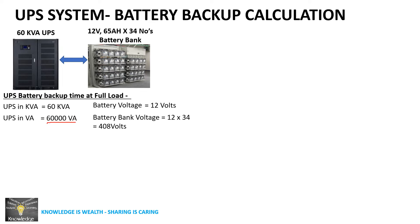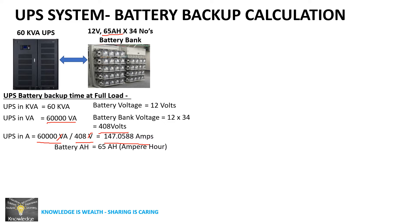Now we have the UPS capacity in volt-ampere and the battery bank voltage. To calculate the amperes: 60,000 volt-ampere divided by 408 volts — the volt units cancel — giving 147 amperes. The battery backup calculation is ampere-hours divided by amperes, so the ampere units cancel and we're left with hours.